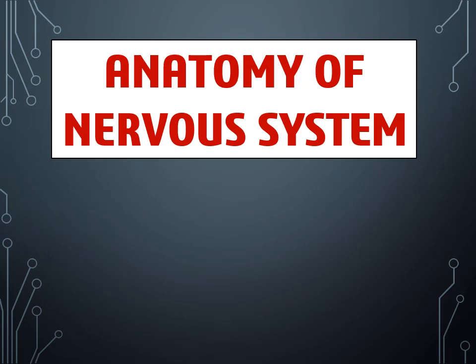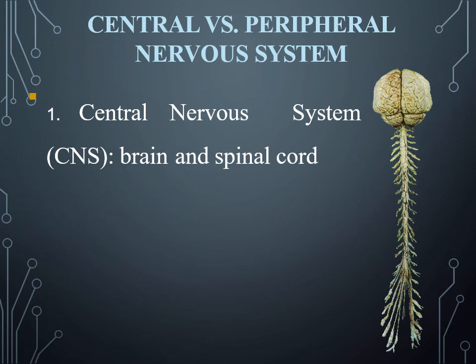Hello everyone, Assalamu Alaikum. This is Faraz Kurban Rajpar, and in this video lecture I am going to discuss the anatomy and histology of the human nervous system. There are two main types of the nervous system: one is the central nervous system, and the second is the peripheral nervous system.